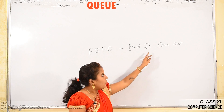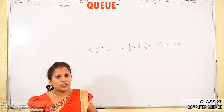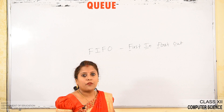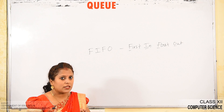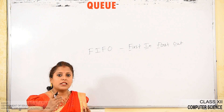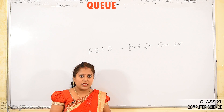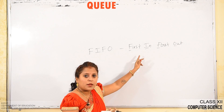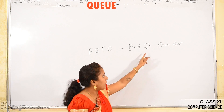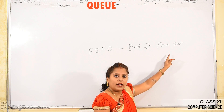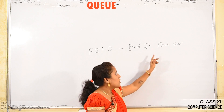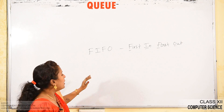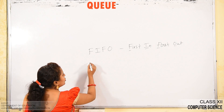FIFO means first in, first out — the element which is inserted first is also the one removed first. In stack it was last in, first out (LIFO), where the element inserted last was removed first. In queue, it is implemented in FIFO manner. Queue has two ends.